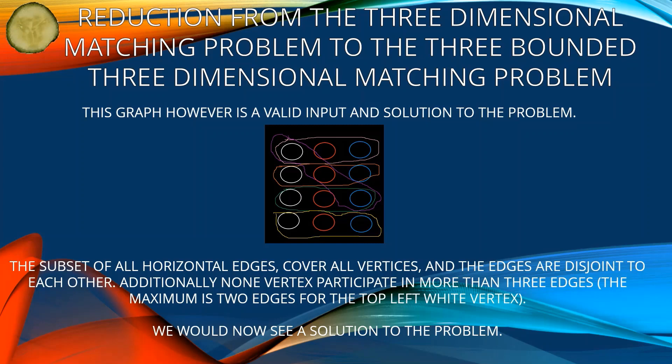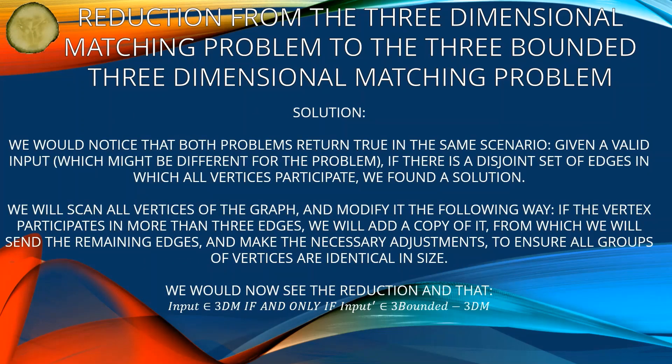We will now see a solution. We notice that both problems return true in the same scenario: given a valid input — which might be different for each problem — if there is a disjoint set of edges in which all vertices participate, we found a solution. We will now see a reduction showing that input is in 3DM if and only if input prime is in 3-bounded 3DM.